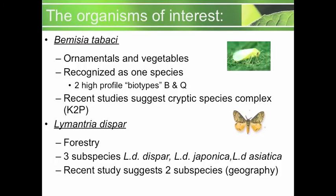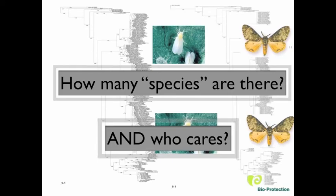The organisms of interest for our study are Bemisia tabaci and Lymantia dispar. Both are highly invasive insect pests that cause millions of dollars in damage each year. We want to know how many species there are for each, and who cares.